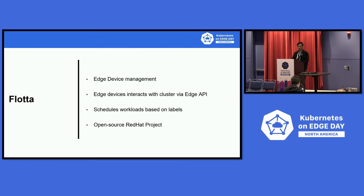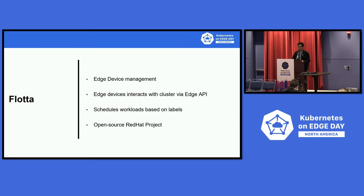To begin with, Procta is a project developed by OpenSoup and Red Hat. It is a tool for managing container workloads on small footprint devices found on edge networks. Edge devices interact with the edge-side cluster via the Edge API, and workloads are scheduled by labels to deploy to the device.